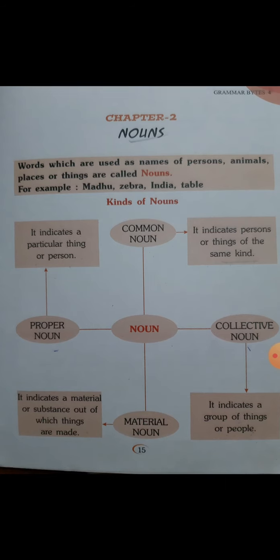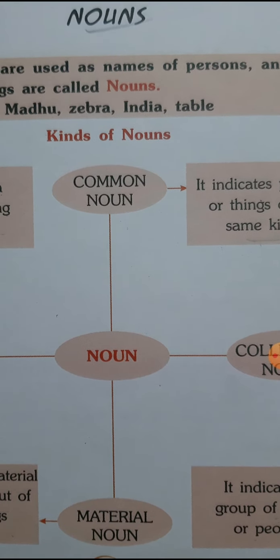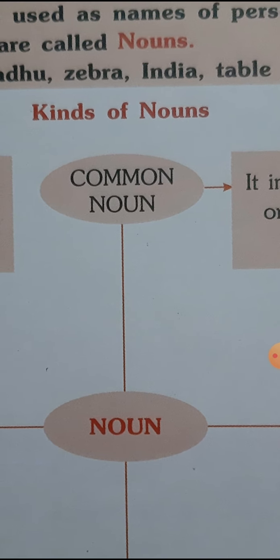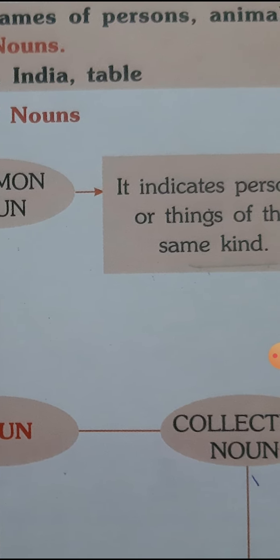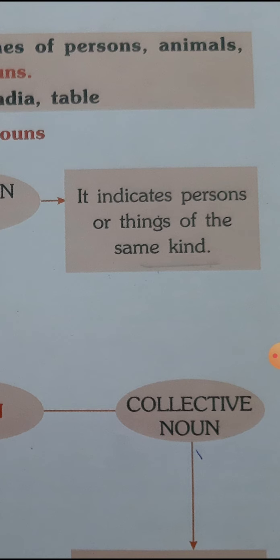Now, kinds of noun. The very first kind, at the bottom on the chart, is common noun. What is common noun? It indicates persons or things of the same kind. So common noun can be anything of the same kind — it indicates any person or anything of the same type.